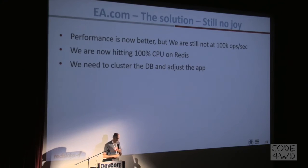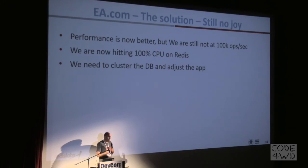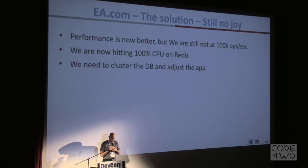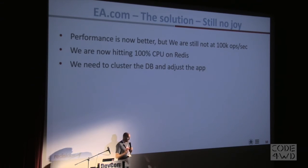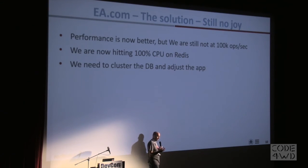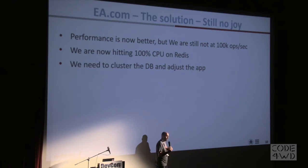But still no joy. After all this tuning, performance did get better — we reached tens of thousands of operations per second at sub-millisecond latency — but we were still not hitting 100k. The reason was that the CPU of each Redis database was hitting 100%, meaning we couldn't stretch it any further.